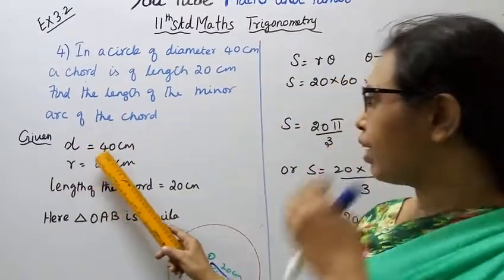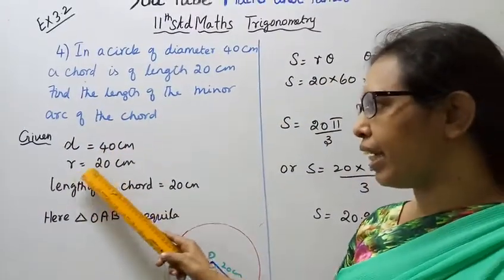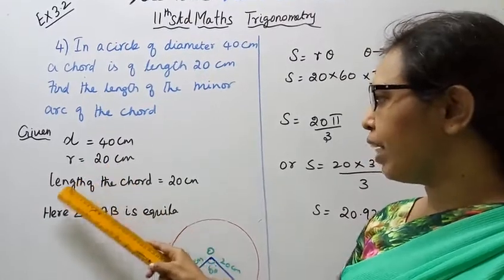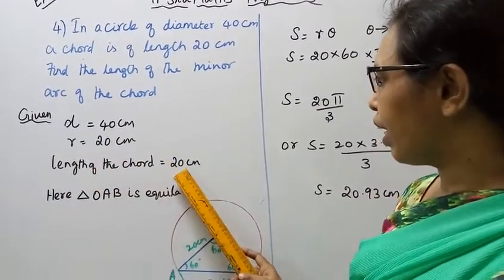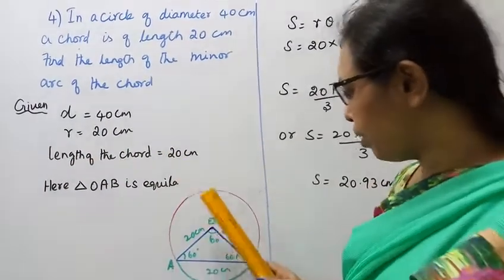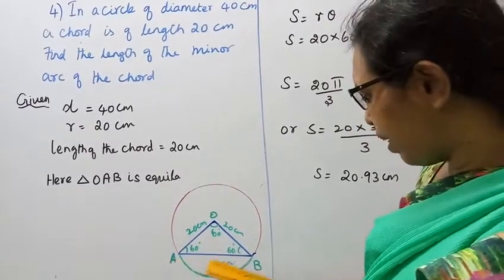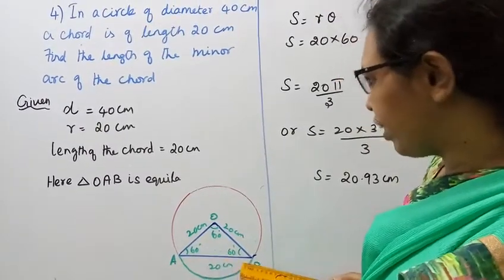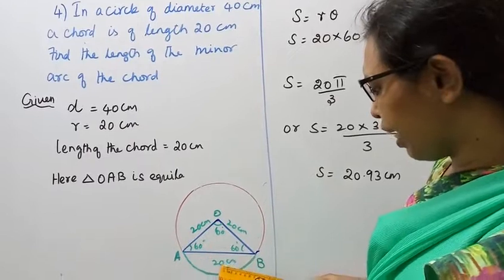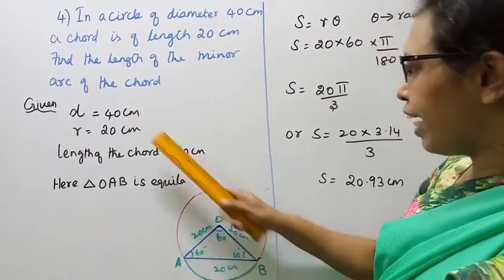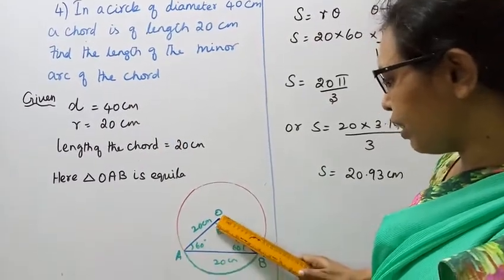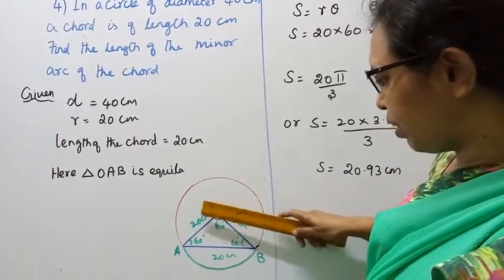Given diameter 40 cm and radius 20 cm, length of the chord is 20 cm. If you have a circle, AB is a chord. The length of the chord is 20 cm. The radius is 20 cm.